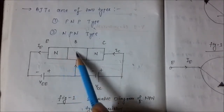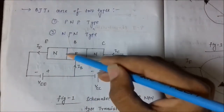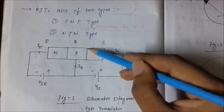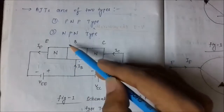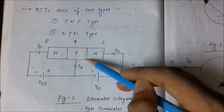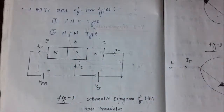This is one junction or interface and this is another junction — three layers, two junctions and three terminals.